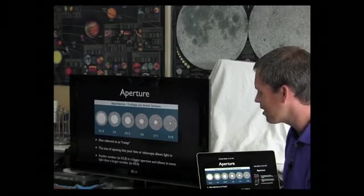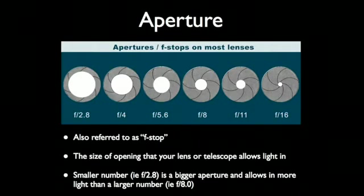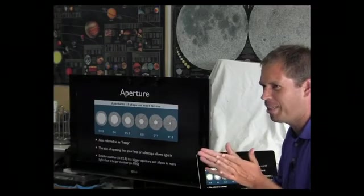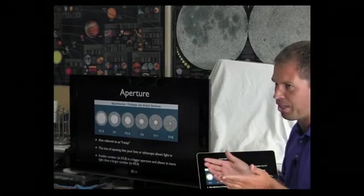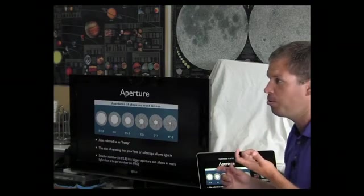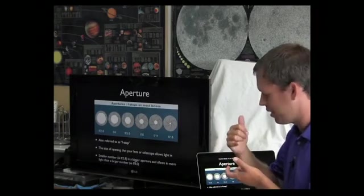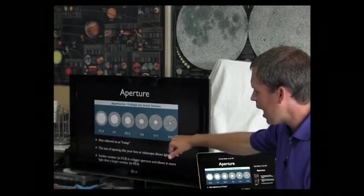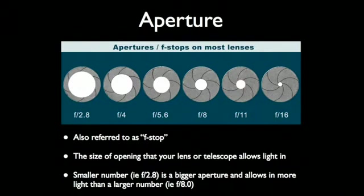Aperture is also referred to as the f-stop. It's the size of the opening of your lens — telescopes have this too. It's actually a fraction, not a measurement in centimeters or millimeters. Even your cell phone can have a pretty good f-stop — a lot of the new cell phones are around f2. The bigger the number, the smaller the opening, because it's a fraction. Think of it like one-tenth of a cookie versus one-half of a cookie — f2.8 lets in more light than f16.